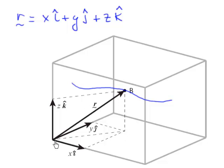The origin of this coordinate system is in this corner right here, and we can represent the position as its vector. A vector is something that has magnitude and it has direction.